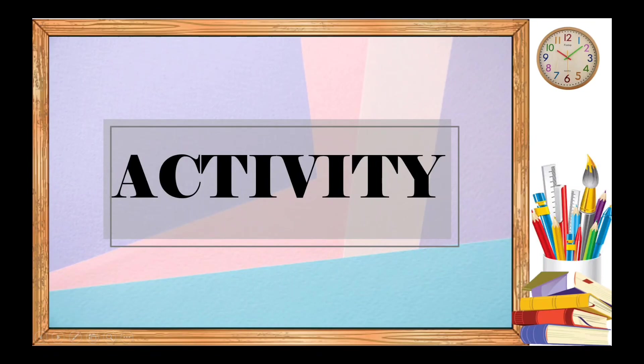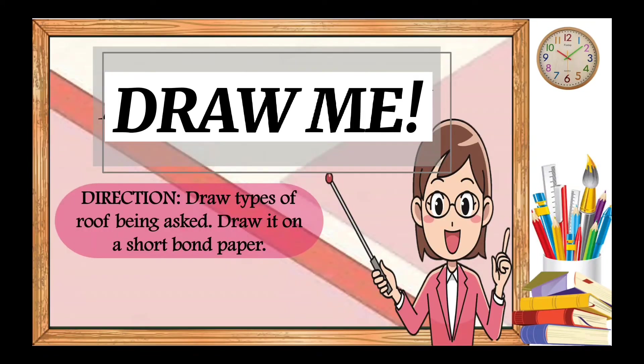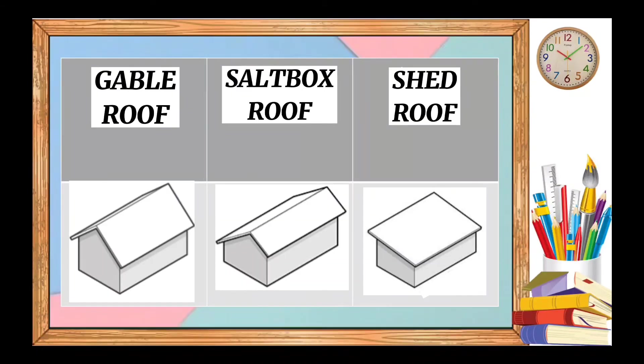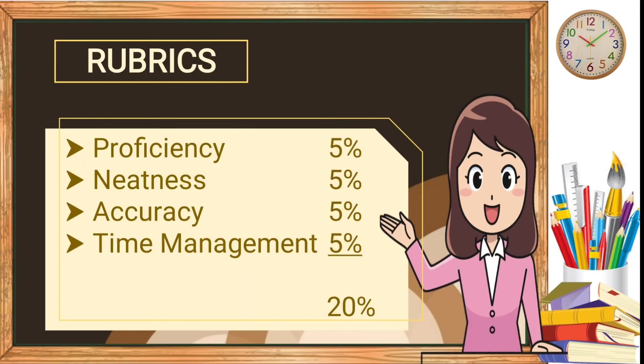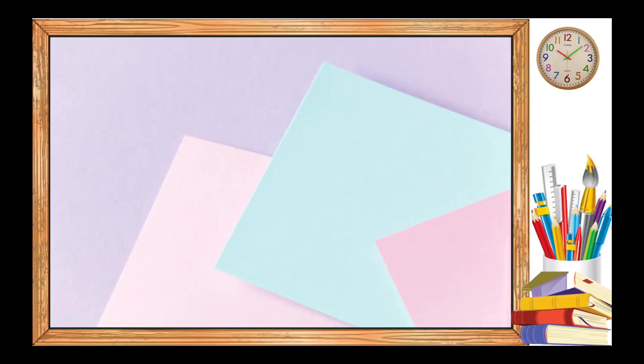Now, let us start the activities on your self-learning module. The title of the activity is Draw Me. Here is the direction. Draw on the given boxes the types of roof being asked. Draw it on a short bond paper. Remind your learners, you can pause the video while doing the activity. We have six boxes here. You just need to draw the roof of a gable, saltbox, shed, gambrel, hip, and mansard of a house, building, or poultry. Your score will be guided by our rubrics. I guess you're already done doing this activity.